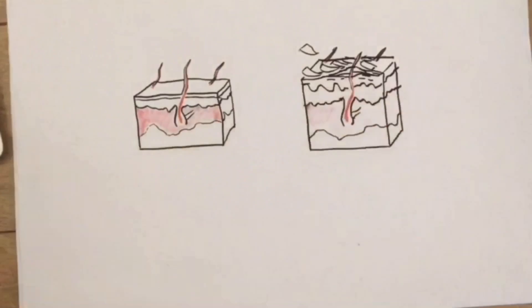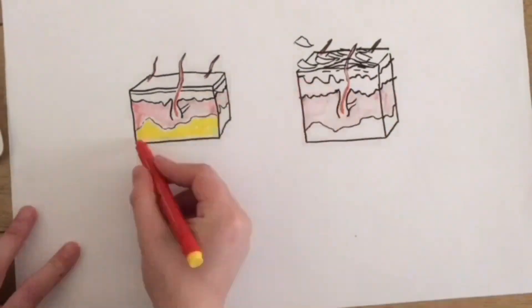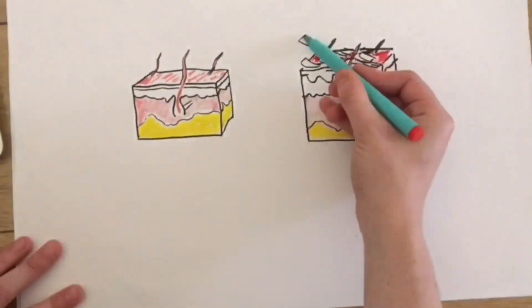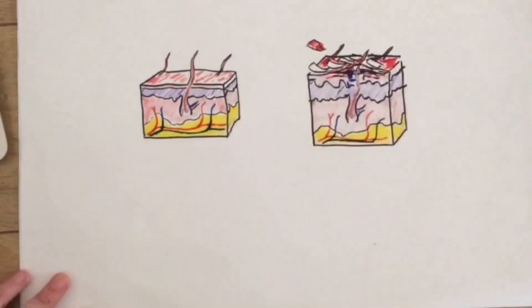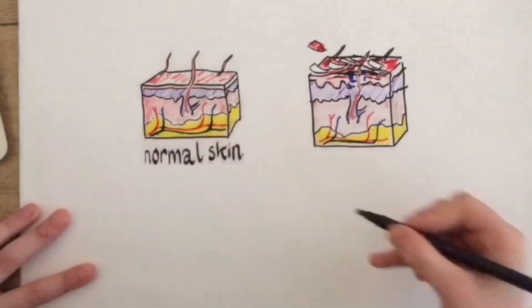In psoriasis there is edema and infiltration of the dermis. There are also micro abscesses and scales and plaques on the skin surface.